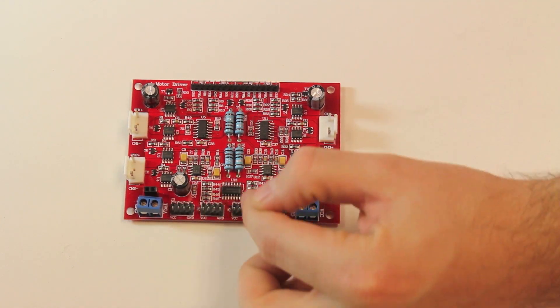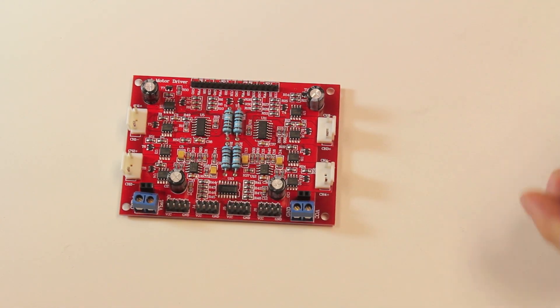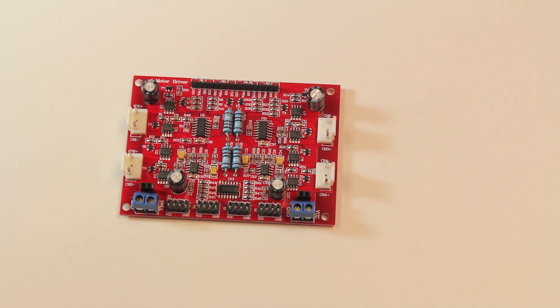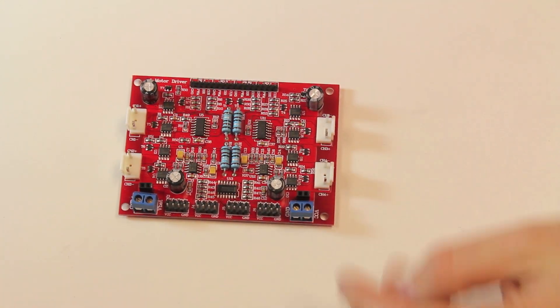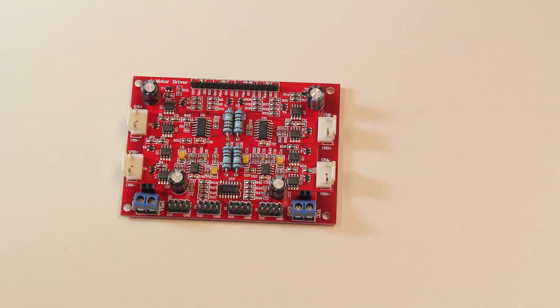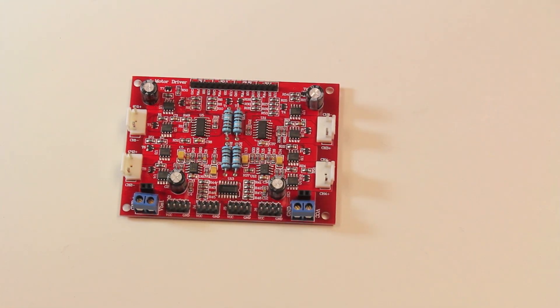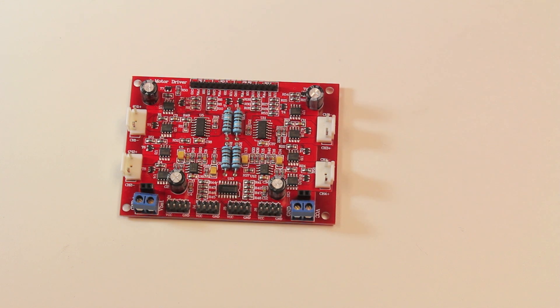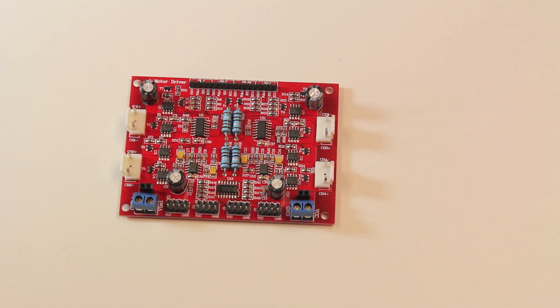But in addition, down here, we have these four connectors which connect directly to the optical encoders. So you can actually run the optical encoders directly through here. We also have the power connectors down here and then the 1, 2, 3, and 4 on the channels that you would connect back to your microcontroller and send PWM signals to control the motors.